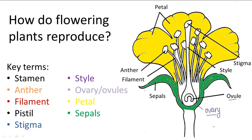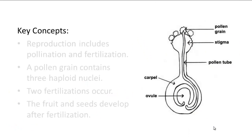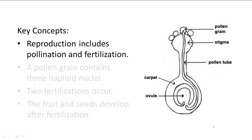Now that we know the names of the reproductive organs, we can delve into a more detailed description of the sexual reproductive process. The reproduction of a flowering plant has two stages: pollination and fertilization. In pollination, the pollen grains fall onto the sticky stigma and they're either blown there by the wind or moved there by insects such as the well-known bee.